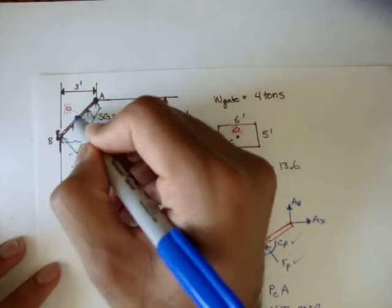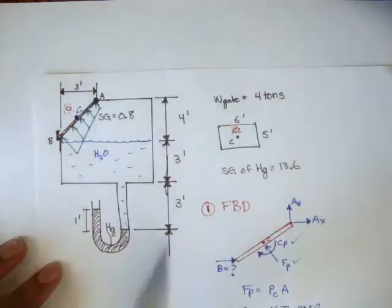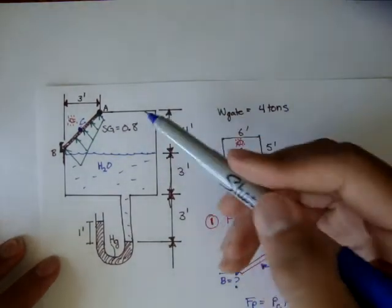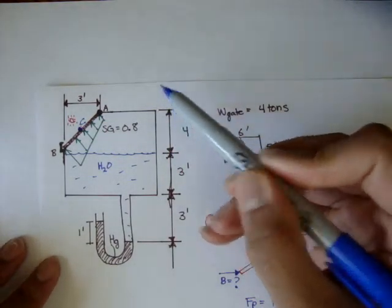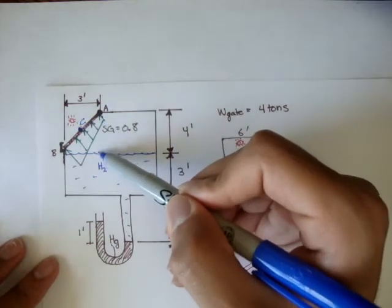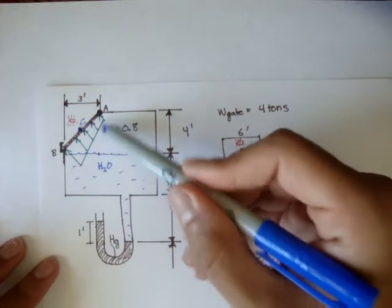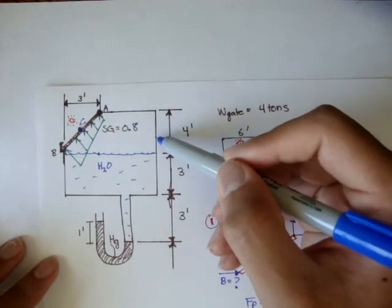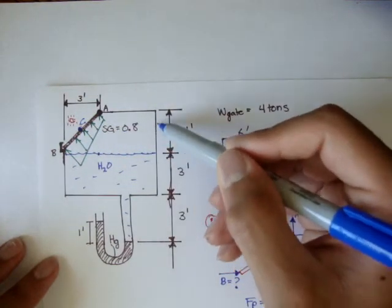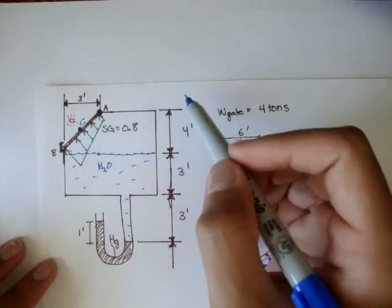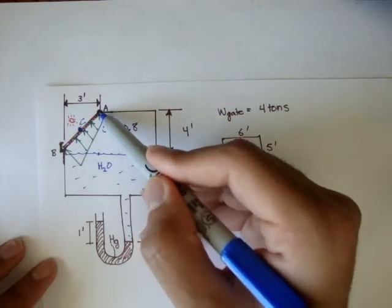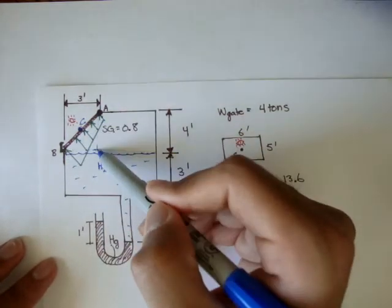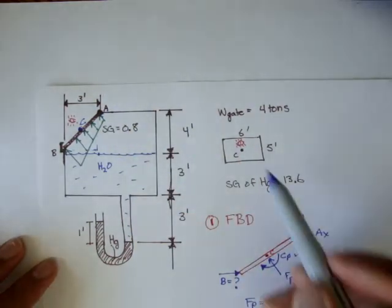So, I'll say that the centroid is right about there. And, it's going to be, if this is four feet, if the distance from A to the water is four feet, that means the centroid of this gate is two feet, right, halfway four. And, it looks like this is a three, four, five triangle.